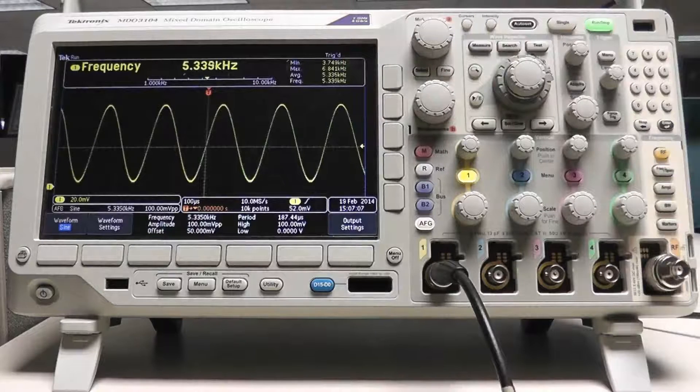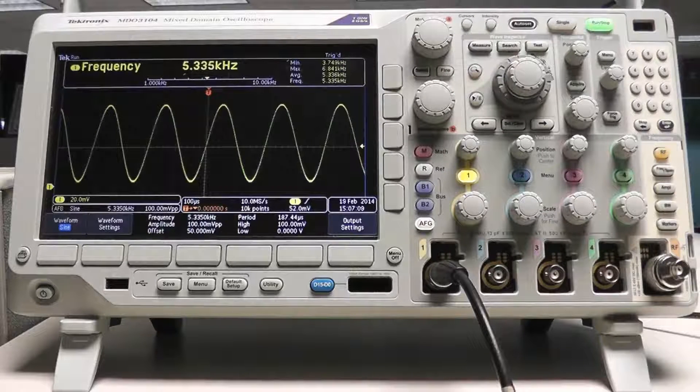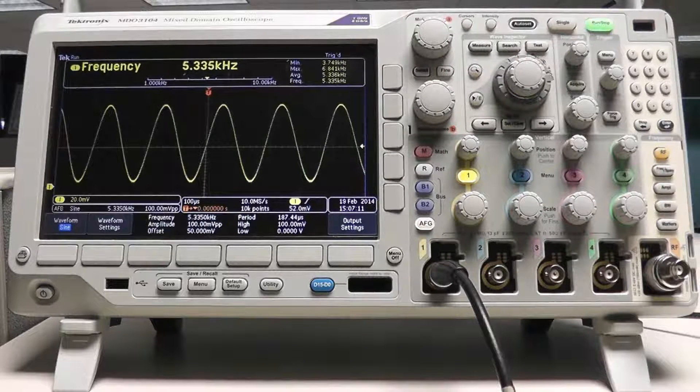This can be used as a measurement settling indicator because the bar will shrink down to nothing if the measurement hasn't changed in 5 seconds.